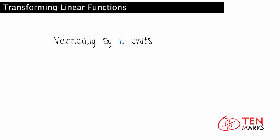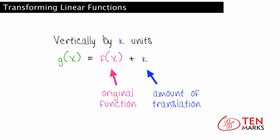In particular, a function is translated vertically by k units means that k is added to the output value f. So the equation for the translated function is g equals f plus k, where f is the original, k is the amount of vertical translation, and g is the transformed function.